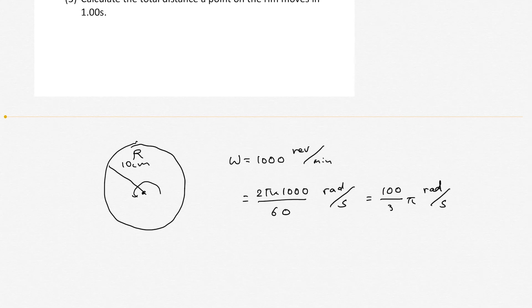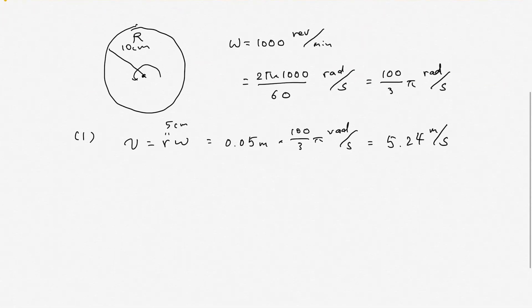Once you have these numbers, you can start to solve the questions. Number 1. Tangential speed at a point 5 cm from center. So velocity is expressed as r·ω. This r is 5 cm. So it becomes 0.05 m times 100π/3 radian per second. Then you can calculate. It becomes 5.24 m per second. This is the answer to the first question.